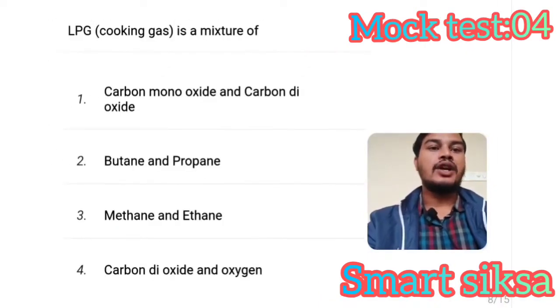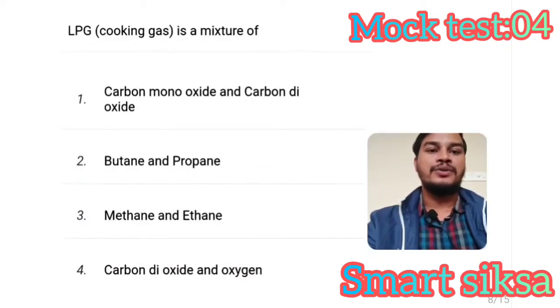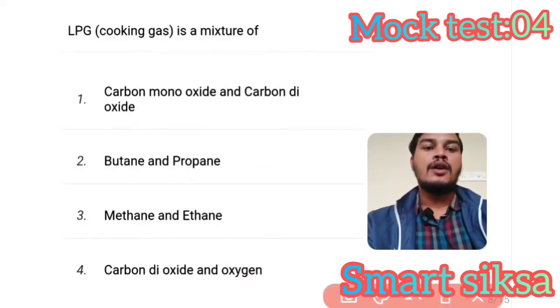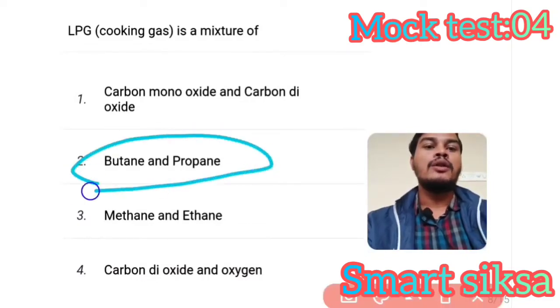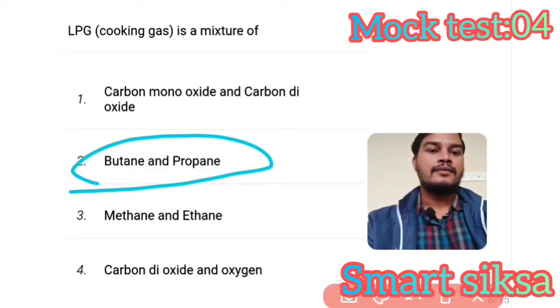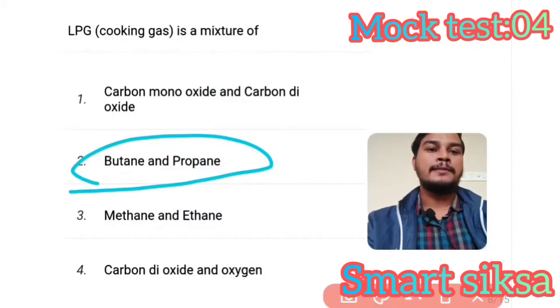Next question: LPG, cooking gas, is a mixture of? Answer is option number 2 — Butane and propane. Butane and propane are used in cooking gas.